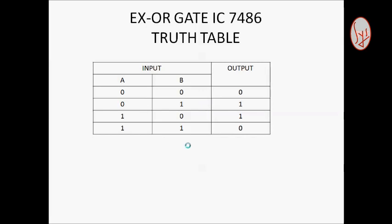Truth table of XOR gate. Input 00, output is 0. Input 01, output is 1. Input 10, output is 1. Input 11, output is 0. So we completed XOR gate IC 7486 theory.